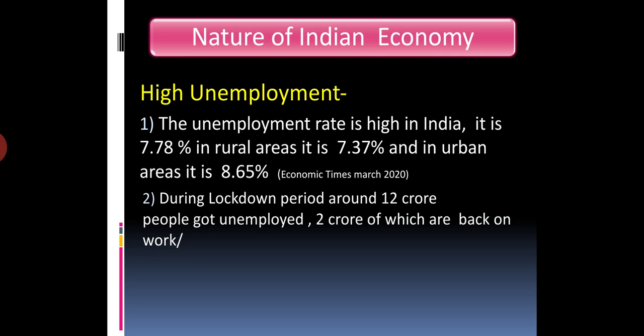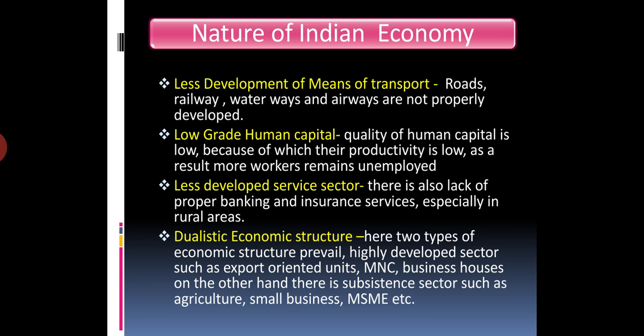The next characteristic is high unemployment. India's unemployment rate is 7.78% — in rural areas it is 7.37% and in urban areas it is 8.65%. This is much higher than the normal unemployment rate of around 4-5%. During the lockdown period, around 20 crore people became unemployed, though approximately 2 crore returned to work after the lockdown.